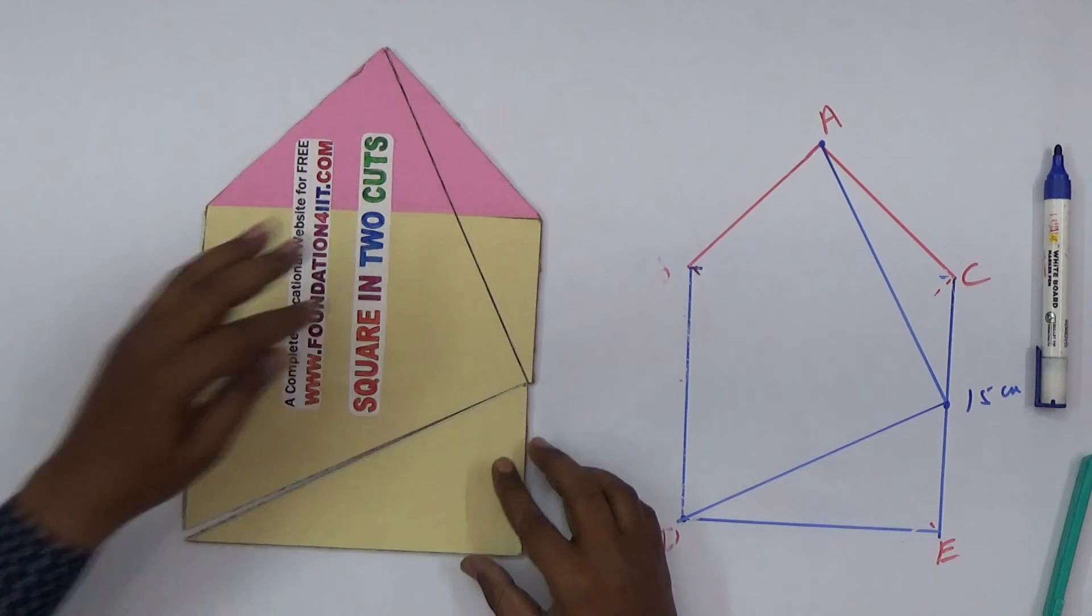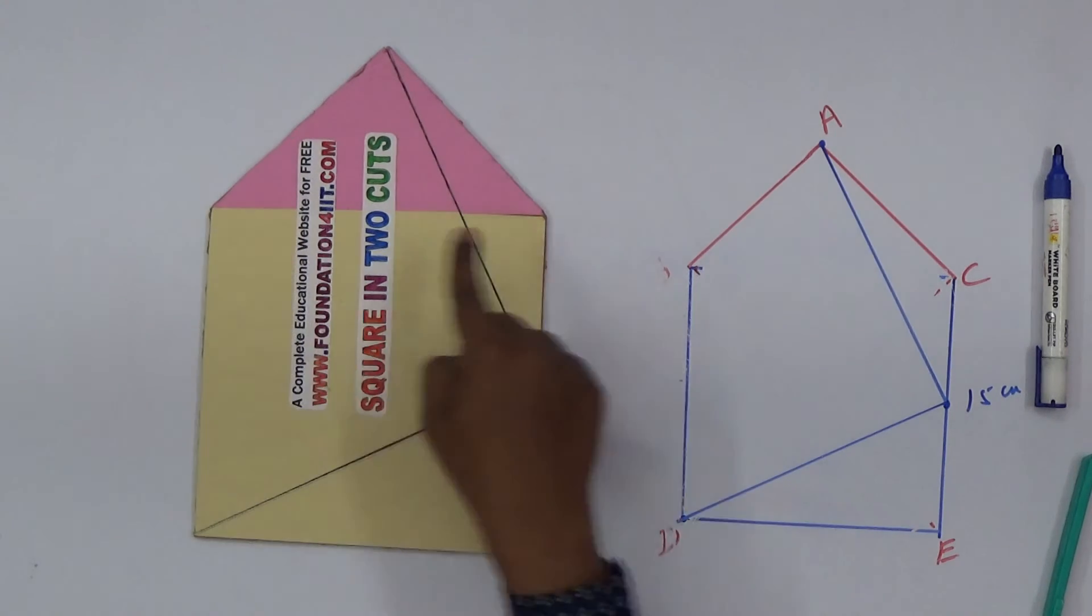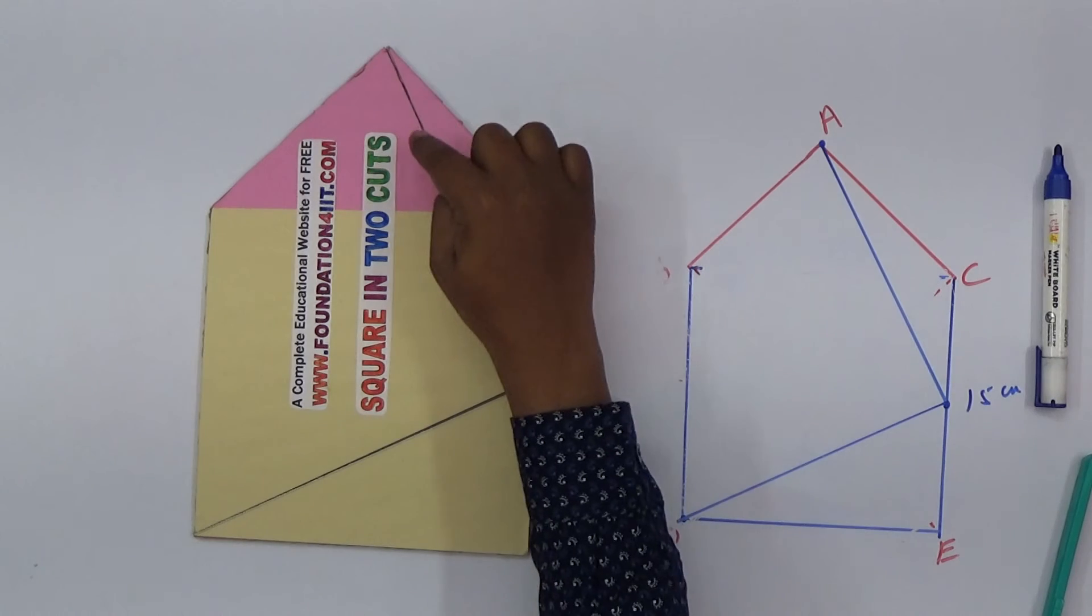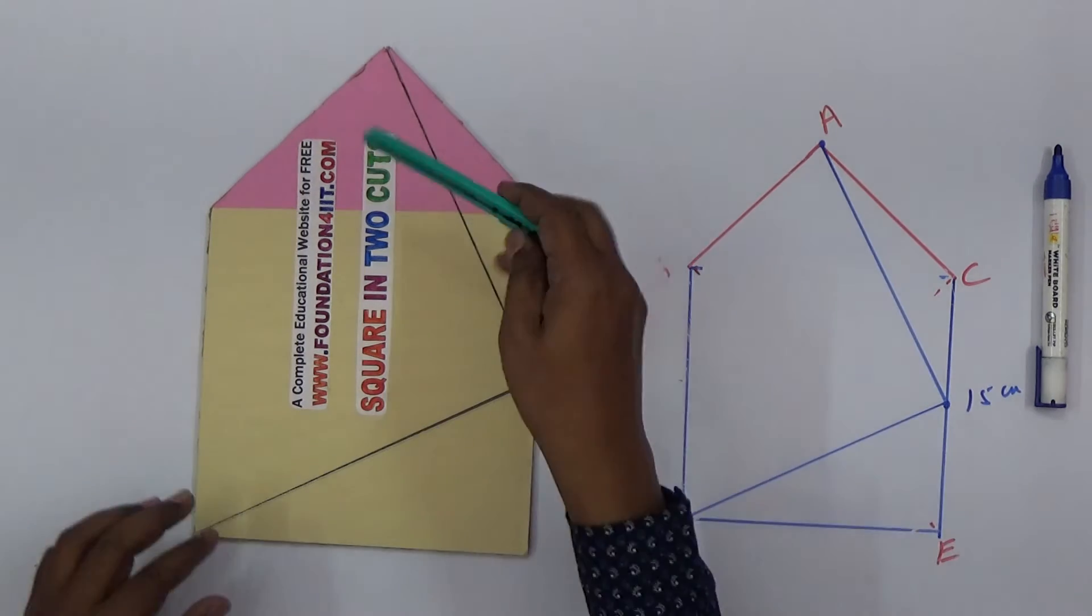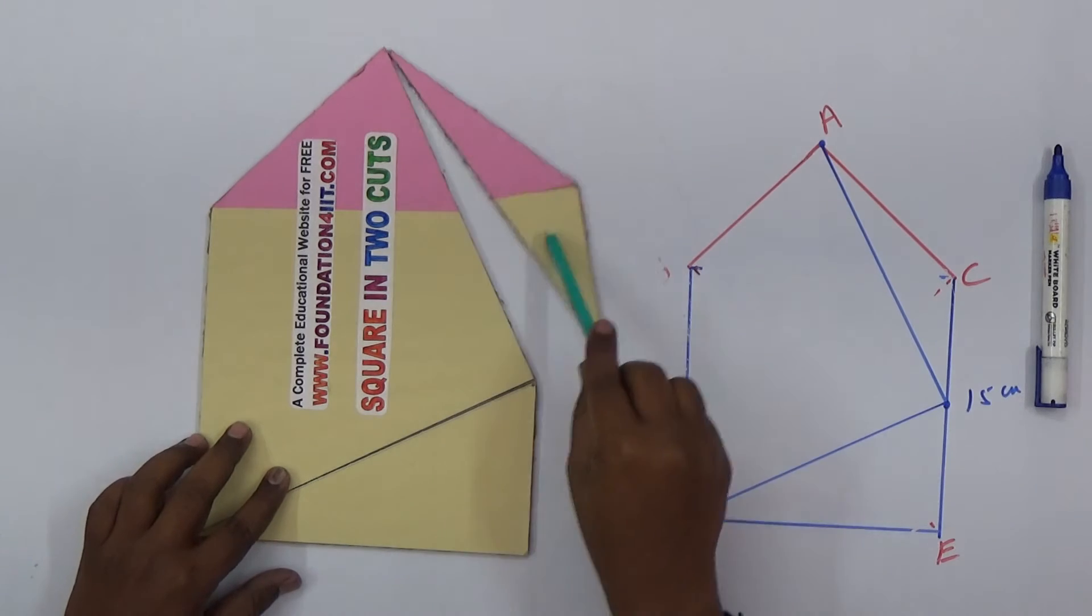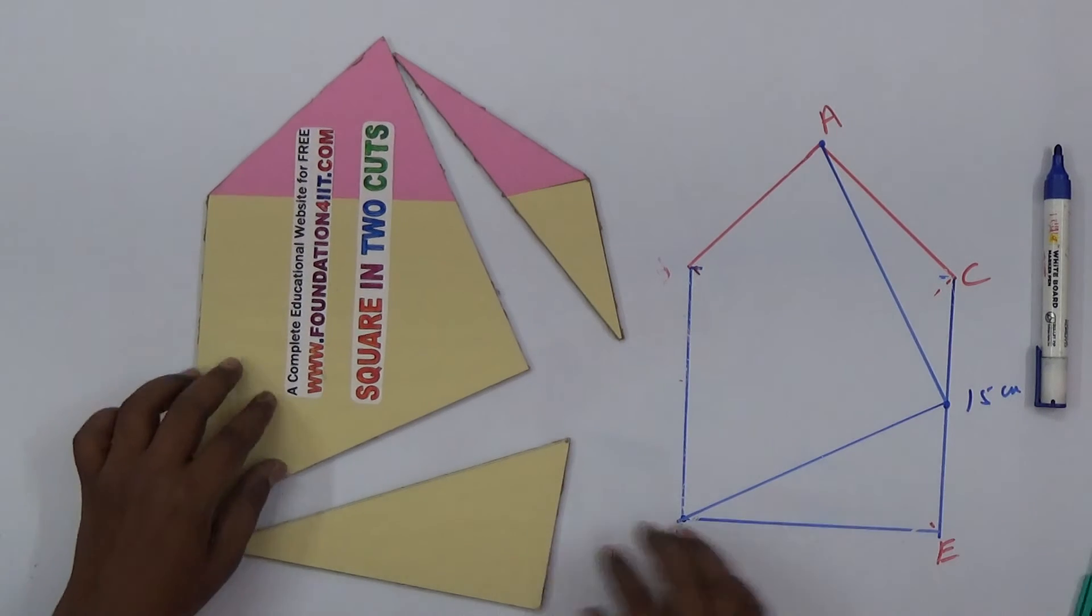This is only three cuts - this is the specialty of this. You can test also. Only these are the two possibilities, there are no other possibilities. Again, this is the square and triangle. Triangle area is one-fourth of the square. Only two straight cuts. This is one part and this is one piece - using this we can make a square again.